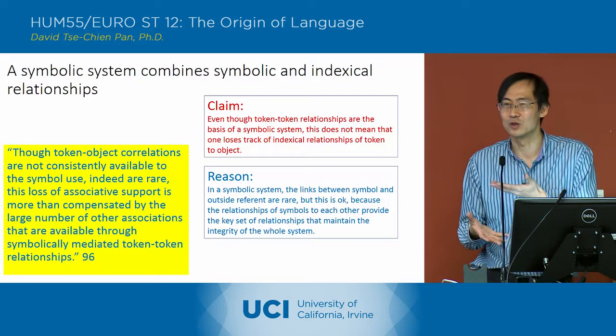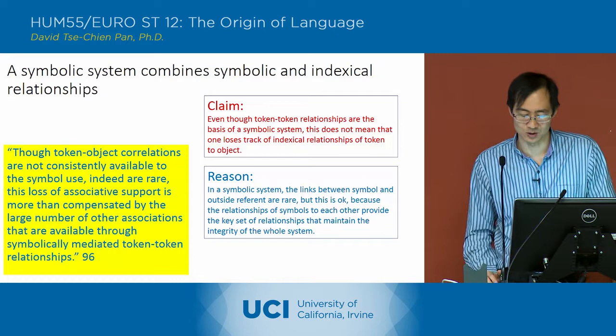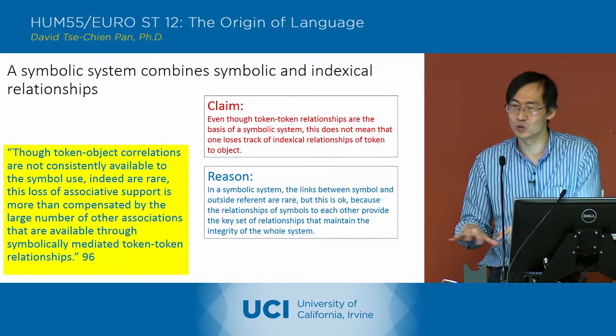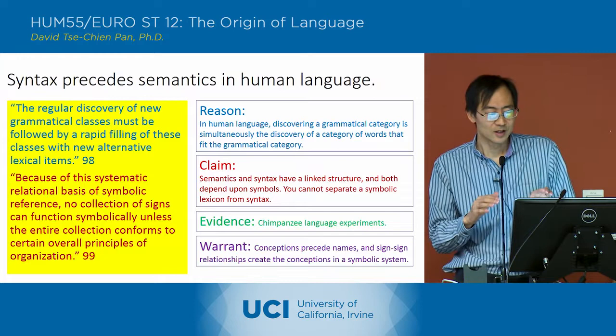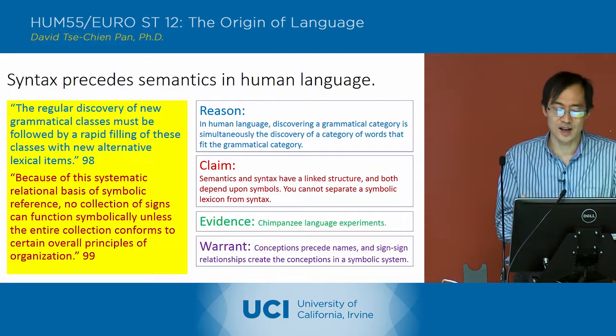Everything else she experiences about the falls is based on sign-to-sign relationships — all these words and sentences about the falls that she can extrapolate from that one associational relationship. But the indexical relationship is not unimportant; you still have to maintain this general correspondence of the sign to the objects. It's just that you're able to understand those sign-to-object relationships as subordinate to the relationships you're setting up between signs. And so, as Deacon is indicating in laying this structure out, syntax precedes semantics.